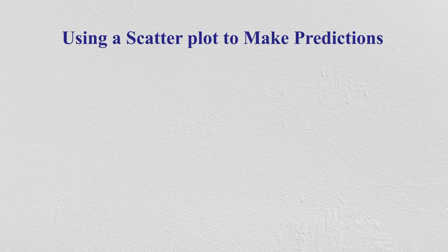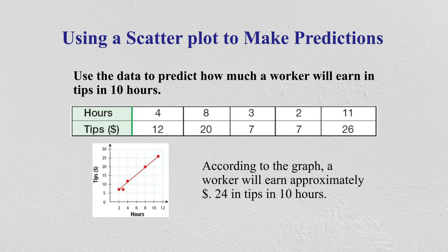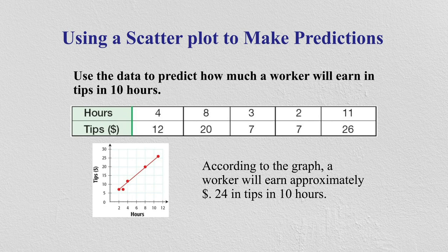Another use of scatter plot is to make predictions. On the horizontal axis we have hours worked, and on the vertical axis we have tips in currency. The hours are 4, 8, 3, 2, 1 and the tips are 12, 27, 7, 26. So the more hours you work, the more your tip is. The first dot is at (4, 12) and so on. According to the graph, a worker will earn approximately 24 in tips if they work 10 hours.